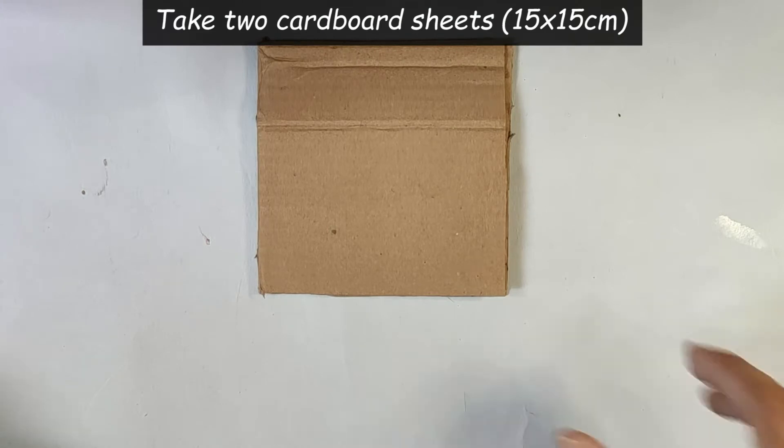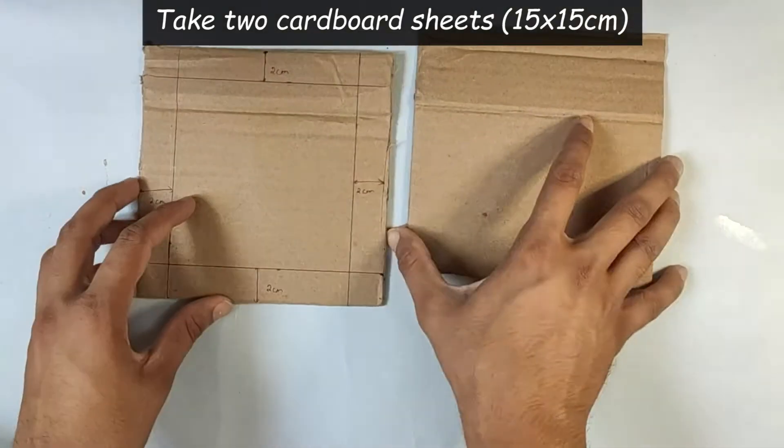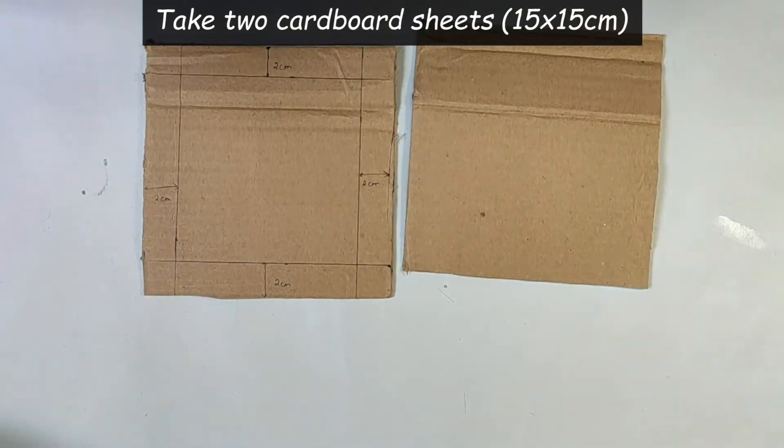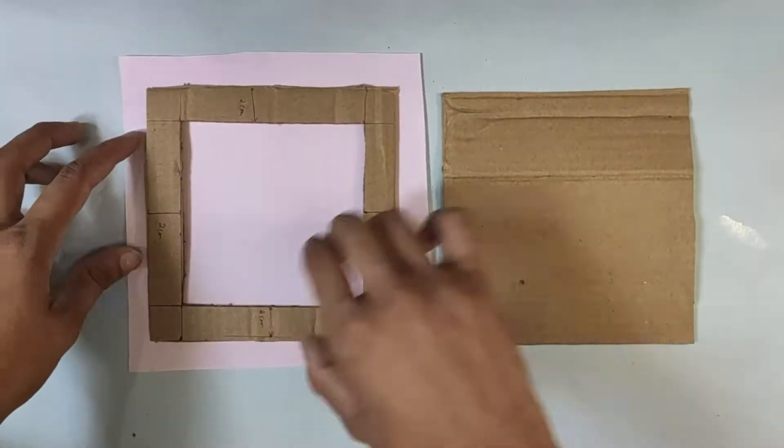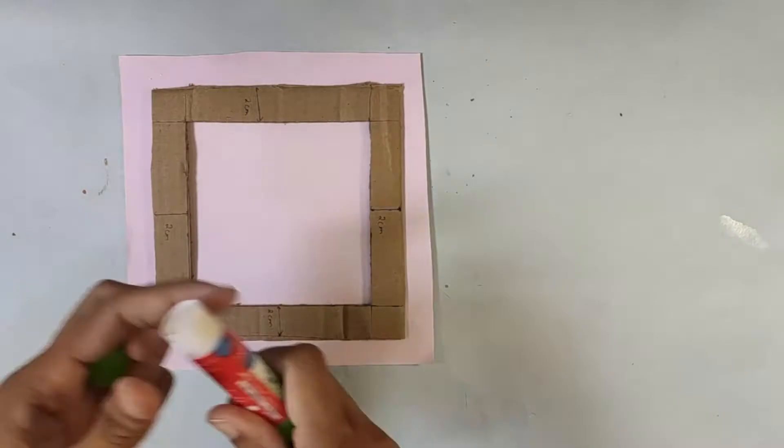Take two cardboard pieces of dimension 15x15cm and take out the inner portion from one of the cardboard as shown in video. Now cover the cardboard which is hollow from the middle with the colored paper.